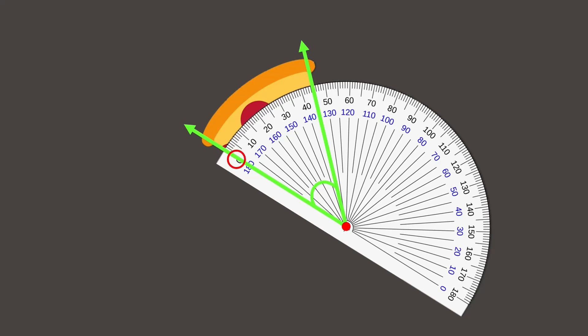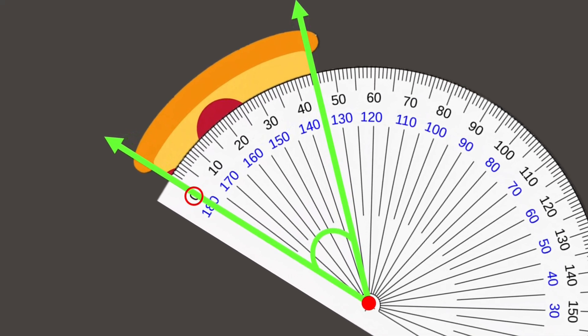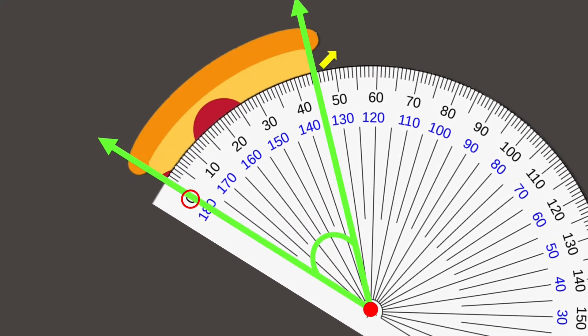Remember, you may use either the inner or outer scale. For this one, I'll use the outer scale. You'll see that one arm is pointed at 0 degrees, while the other arm is pointed at 45 degrees. This means that the angle measures 45 degrees.